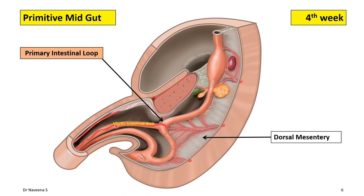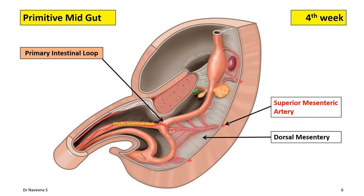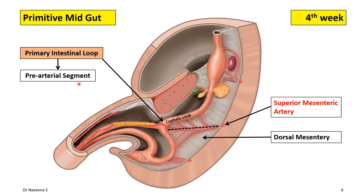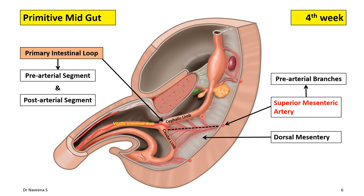The apex is attached to the vitello-intestinal duct. Through the base, the artery of the midgut — that is, the superior mesenteric artery — enters into the dorsal mesentery to supply the primitive midgut. In relation to the course of the superior mesenteric artery, the primary intestinal loop or midgut loop can be divided into two parts: the upper part called the cephalic limb or pre-arterial segment, and the lower part called the caudal limb or post-arterial segment. The branches of the superior mesenteric artery supplying these two segments can be called pre-arterial and post-arterial branches.